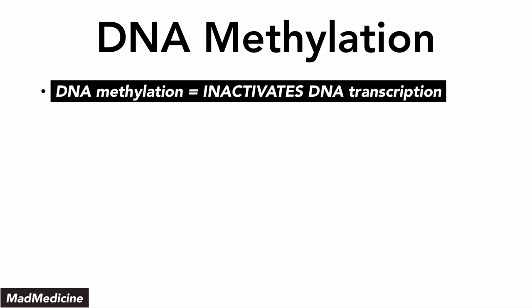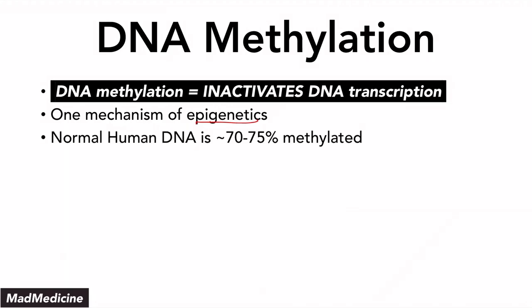DNA methylation is essentially inactivating DNA transcription. This is one mechanism of epigenetics — how our environment and all the things we interact with affect our genetics, not just our genes themselves, but everything else that affects our gene transcription. DNA methylation is one factor that plays a role in epigenetics. Our normal DNA is 70 to 75% methylated, which means that, on average, the majority of our DNA is not transcribed.